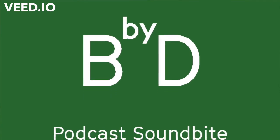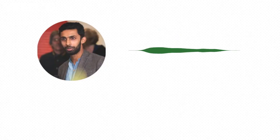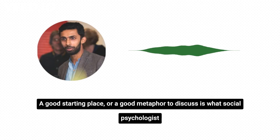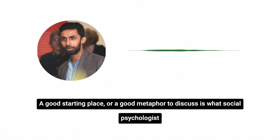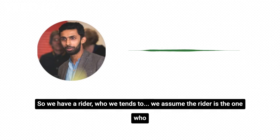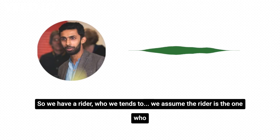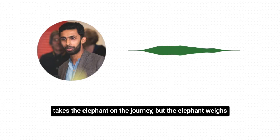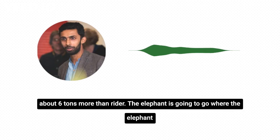What a behavioral science lens could look like, or what a behavioral scientist does. A good starting place — a good metaphor to discuss — is what social psychologist Jonathan Haidt explores as the rider and the elephant. We assume that the rider is the one who tends to take the elephant on the journey, but the elephant weighs about six tons more than the rider.